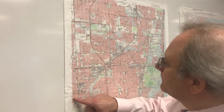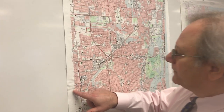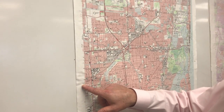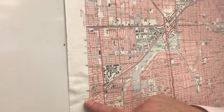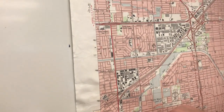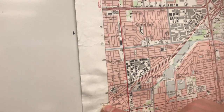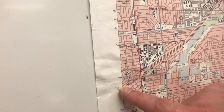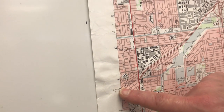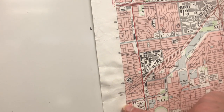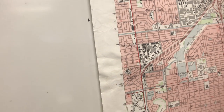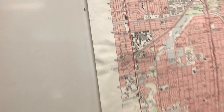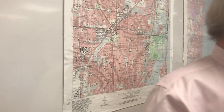If you look at the map, you can see, for example, this tick mark on the edge of the map says 570,000 feet. So that tick mark is part of the State Plane Coordinate System. That's all you really need to know about it.